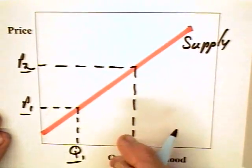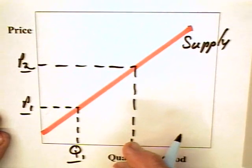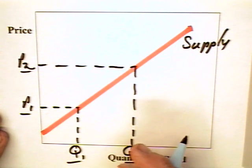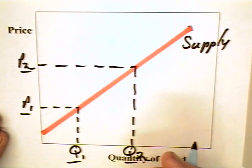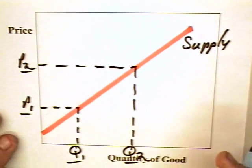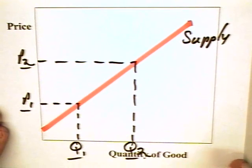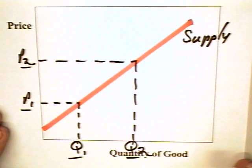The interesting question is: why do economists assume an upward sloping supply curve? One explanation is that they observe it all the time — that is, when price goes up, the quantity made available by producers goes up. But there is a more detailed, complicated answer that we will get to in a later chapter, having to do with the law of diminishing returns.